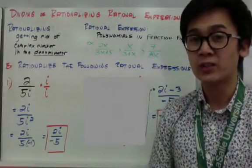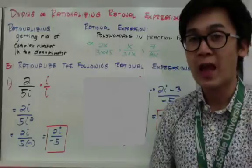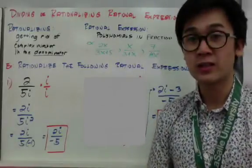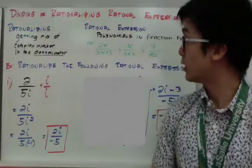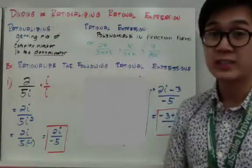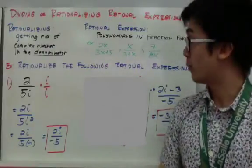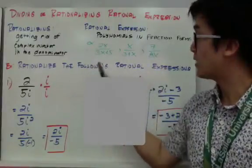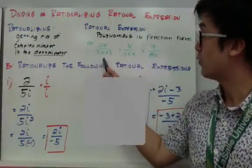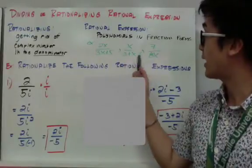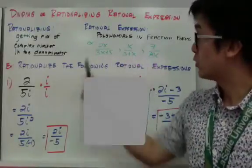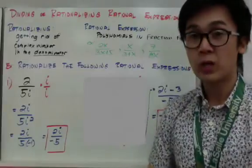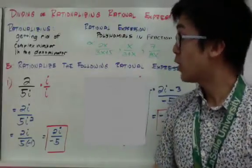A rational expression is like a fraction, but with polynomials — we can say they are polynomials in fraction form. Examples include two x over three x plus five, x over three plus x, and seven over eight x. These are rational expressions, similar to what we are working on today.